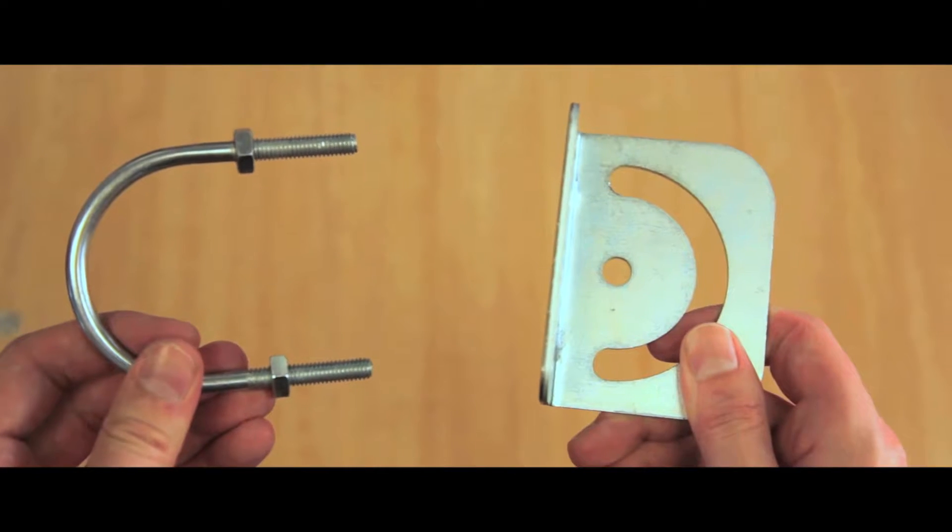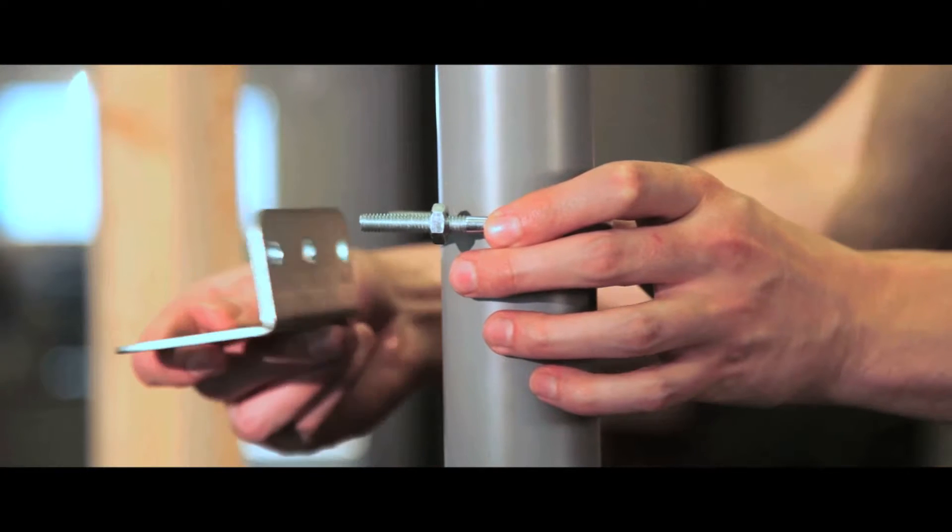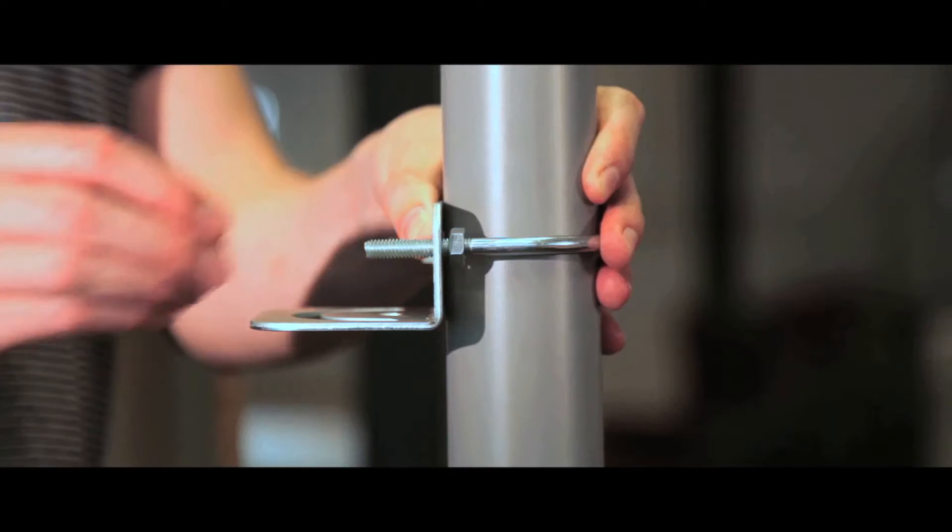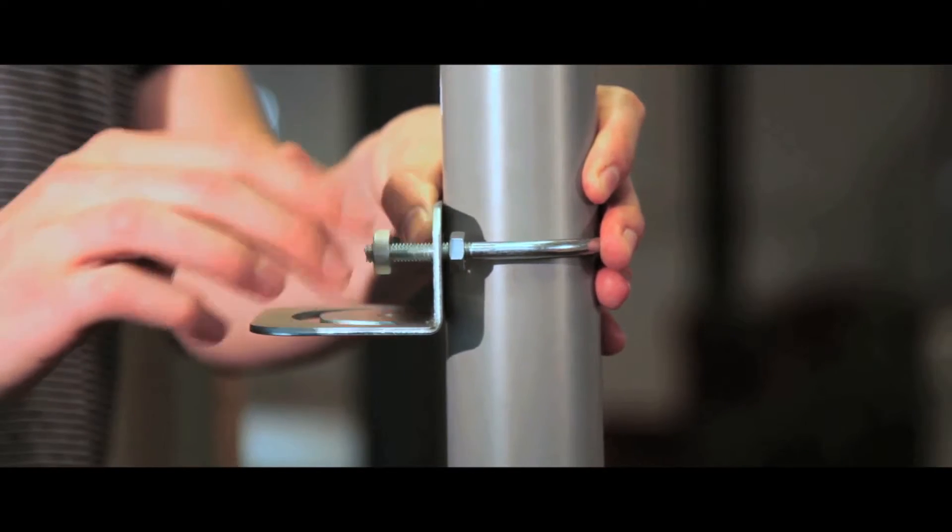Installation on a post: take the U-bolt and the wall bracket. Place the U-bolt around the post and place the wall bracket onto the ends of the U-bolt. Screw into position.